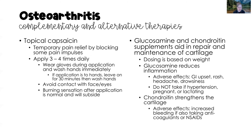There are some complementary and alternative therapies related to osteoarthritis. The first is capsaicin, which is topical and provides temporary pain relief by blocking some pain impulses. It is applied directly to the painful joint up to four times a day. Teach clients to wear gloves during application and wash hands immediately. If the joints of the hand are painful and gloves cannot be worn, leave the medication in contact with the hands for only 30 minutes, then wash. Avoid contact with the face and eyes. Teach clients that a burning sensation after application is normal and will subside with continued use.